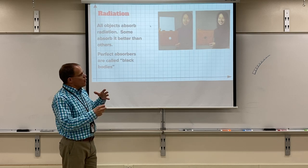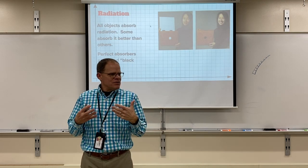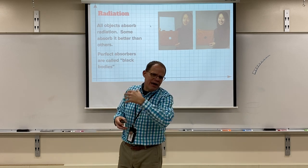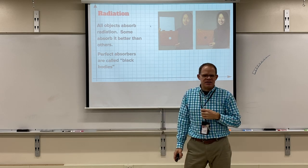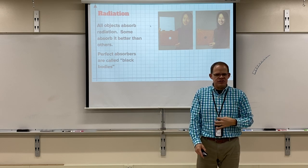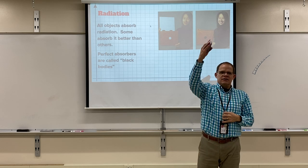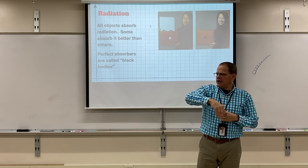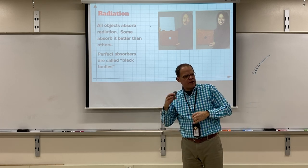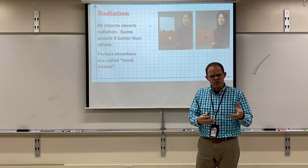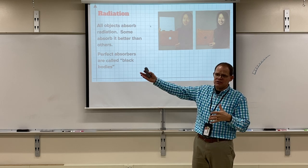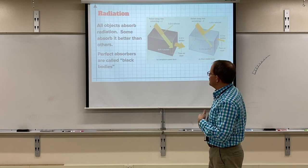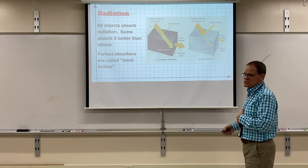Objects that absorb all the energy that hits them and reflect none appear black — we call them black bodies. Someone wearing a dark sweatshirt will be warmer on a sunny day because the sweatshirt absorbs all the radiation hitting it. White or light-colored clothing reflects most of it — that's why it looks white. Things that are dark absorb energy; things that are light reflect most of it.